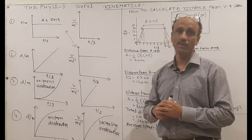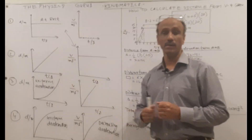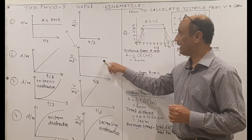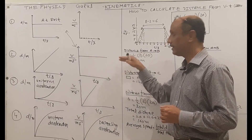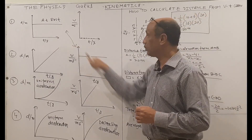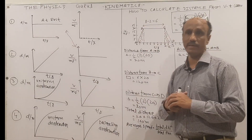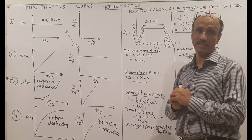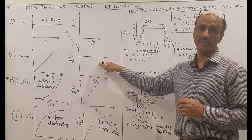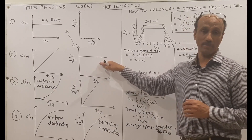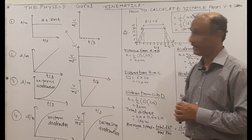Graph number two represents the object moving with uniform speed. In the DT graph, the line will start from the origin with a constant inclination or slope. In the VT graph, this line will be a straight one above the x-axis and parallel to the x-axis. Students often make mistakes with these two graphs, so make sure you have a very clear understanding of each case.